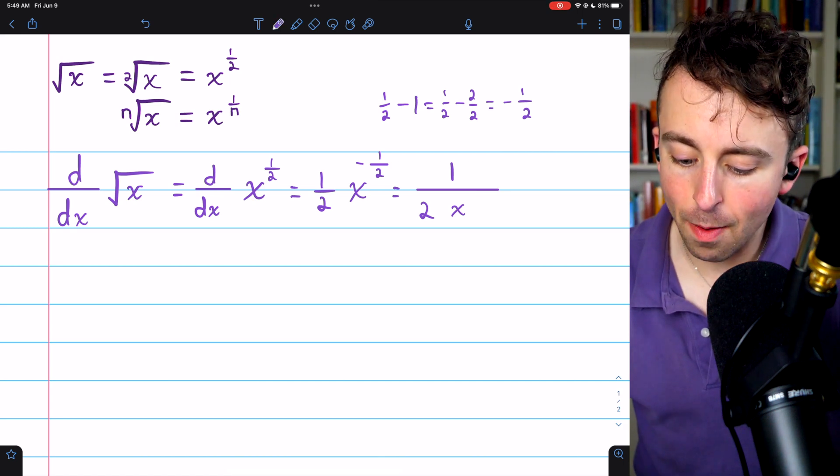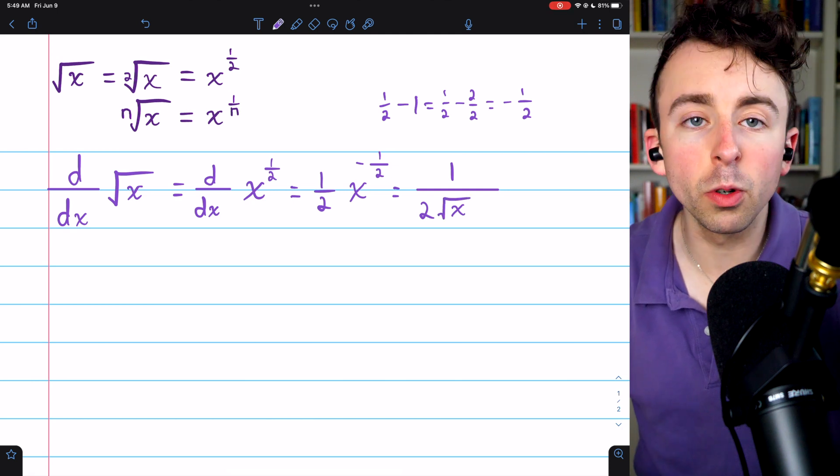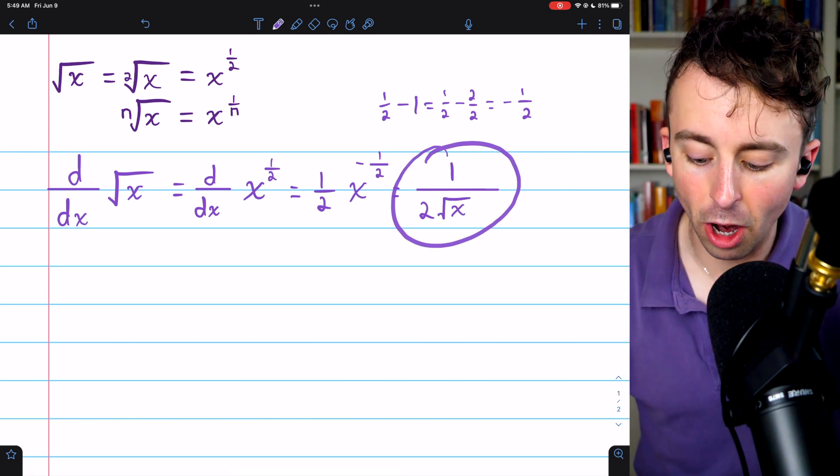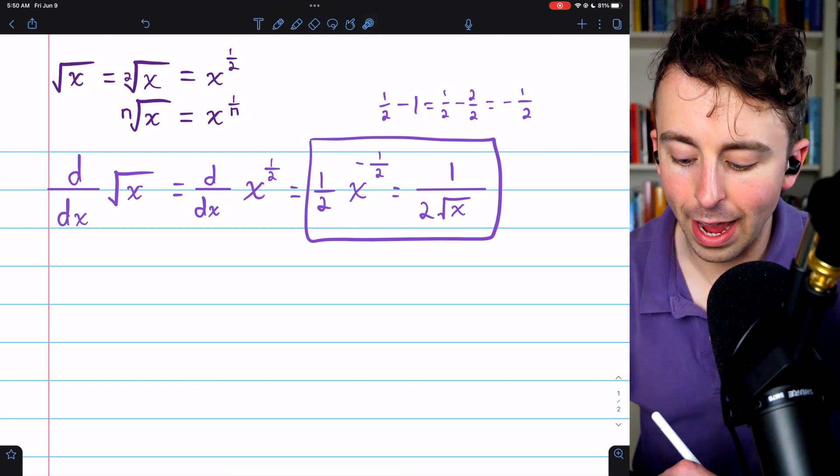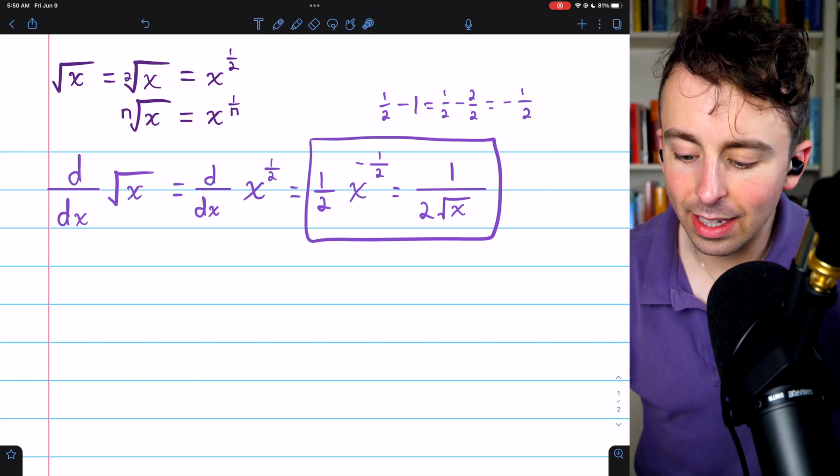We could also rewrite that power of one-half as a square root, if we wanted to, giving us this expression. So that's the derivative of the square root of x. Notice how when we take the derivative of root x, we actually get a root x in the denominator.